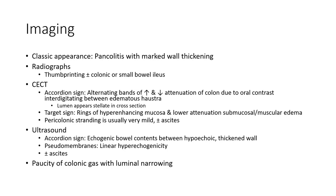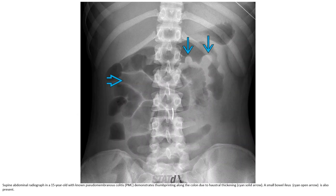Colonic gas with luminal narrowing may also be present. Abdominal CT in a 15-year-old with pseudomembranous colitis demonstrates wall thickening along the colon due to mural thickening. A small bowel ileus is also present.